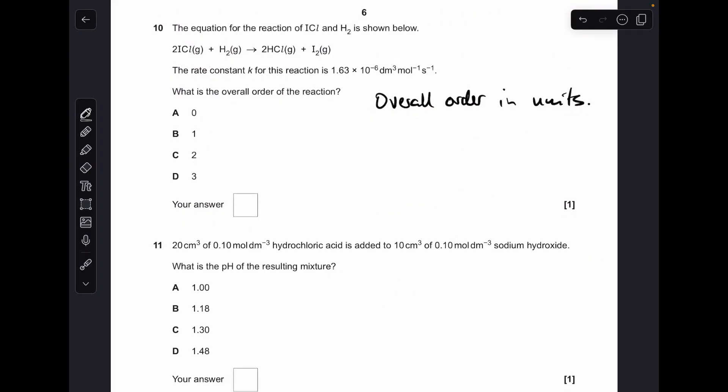Moving on, number 10. So I've written down overall order in units. I'll just quickly explain that. So if we think about how we calculate k or the units for k, so it's rate over the concentration raised to the overall order power.